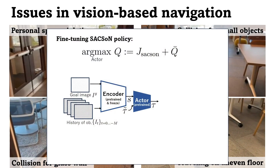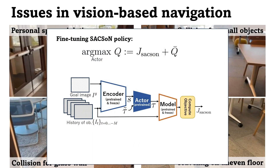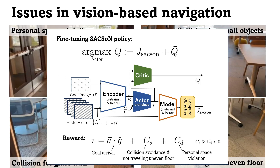To avoid these undesirable robotic behaviors in the pre-trained control policy, we apply SELFIE to fine-tune Saxon. We calculate the model-based objective via a dynamic forward model and estimate Q-values with a critic learned online. SELFIE fine-tunes the actor by maximizing the combined model-based and model-free objective. To avoid undesirable robotic behaviors such as violating personal space, collisions, and traveling on uneven floors, we design a reward function that penalizes these behaviors and encourages the robot to reach a specified goal.